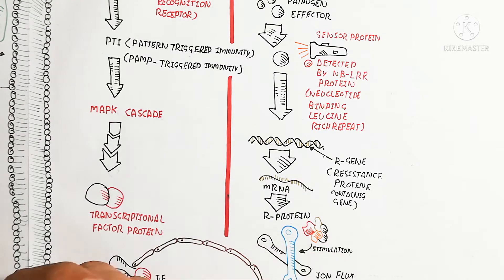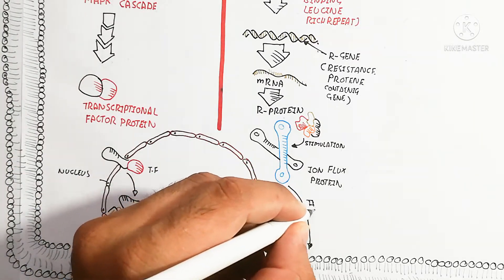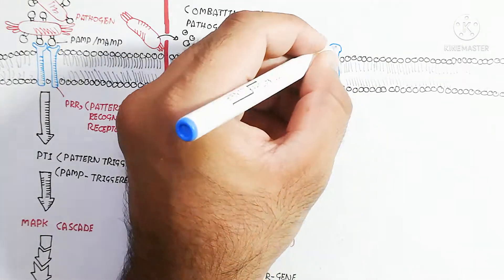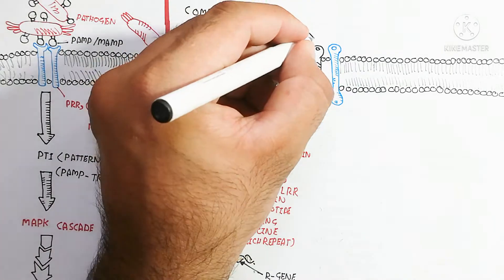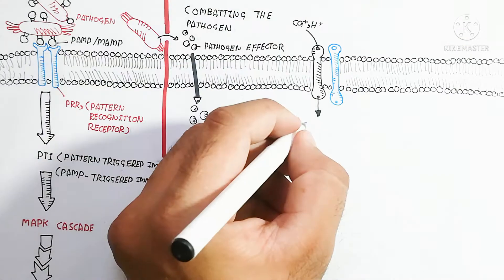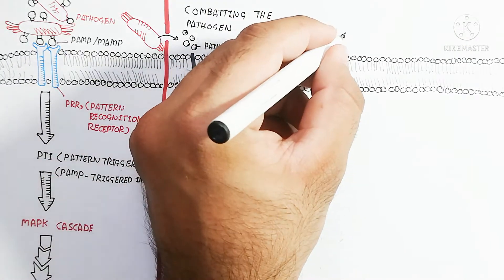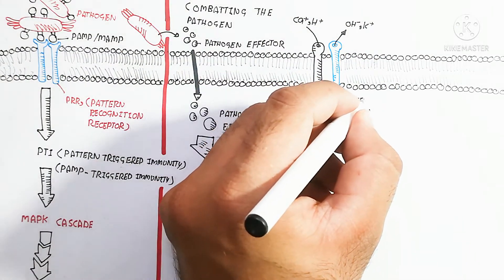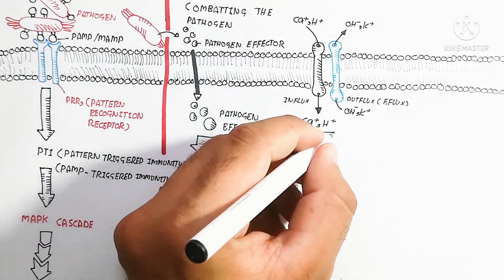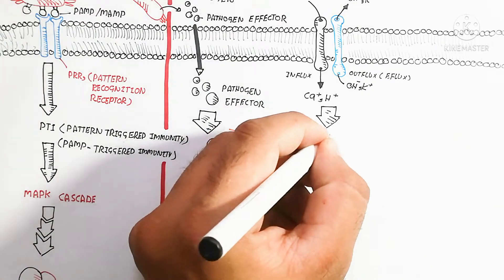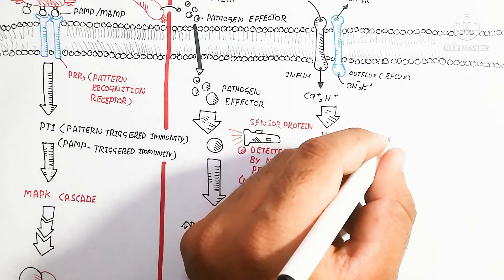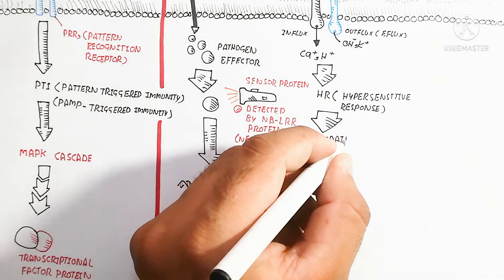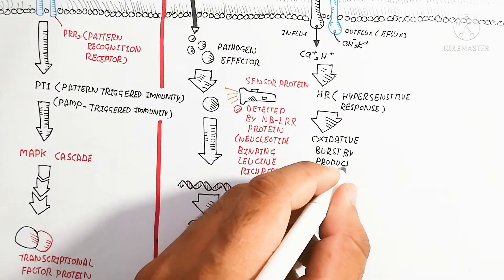This R protein stimulates ion flux proteins. The ion flux protein binds with the plasma membrane, causing calcium and hydrogen to move inside the cell, while hydroxyl ions and potassium move out of the cell. This ion flux causes changes that lead to the hypersensitive response.